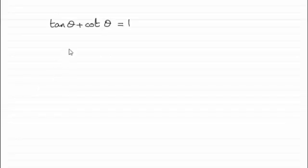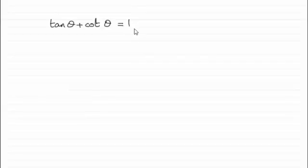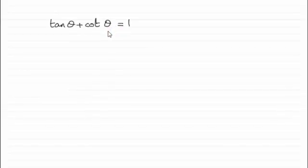Hi. Now for this part of the question we were asked to show that the equation tan θ plus cot θ equals 1 does not have any real solutions. What we need to do is draw from the first part of the question where we took the left-hand side, tan θ plus cot θ, and saw that it was identical to 2 cosec(2θ).